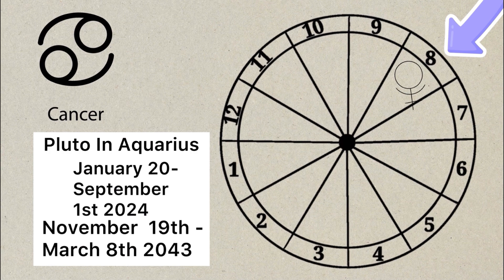Pluto goes into Aquarius, your eighth house, January 20th through September 1st, goes back into your seventh house. And November 19th, all the way through March 8th, 2043, it is going to transit your eighth house. Pluto will finally be leaving your seventh house once and for all. You can breathe a sigh of relief as relationships with partners, your spouse, other people, legal contracts will be a lot easier right now. Or dealing with the public, your enemies can finally go away.